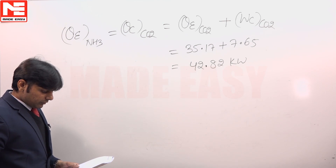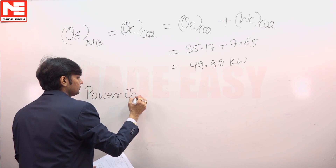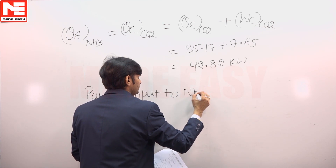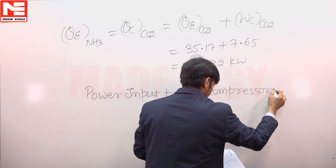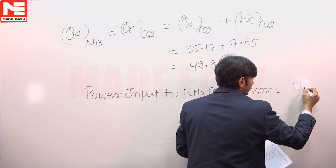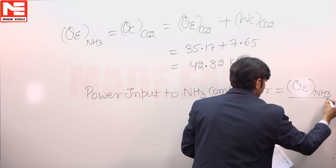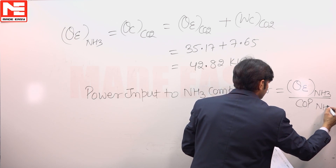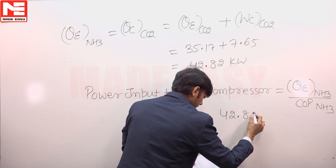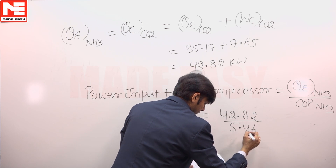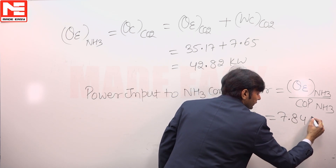We now calculate the power input to the ammonia compressor. It is equal to the rate of heat absorbed by the ammonia evaporator divided by the COP of the ammonia refrigerant, which is 42.82 divided by 5.46. The answer is 7.84 kilowatts. This is the final answer.